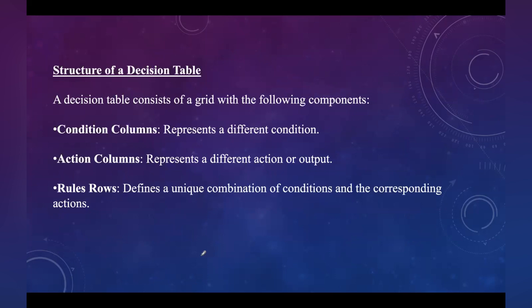Now let's look at the structure of a decision table. We have various components: condition columns, action columns, and rules. Conditions are represented in columns, actions are represented in columns, whereas rules are represented in rows. Each column represents a different condition or action, and each row defines a unique combination of conditions and their corresponding actions.